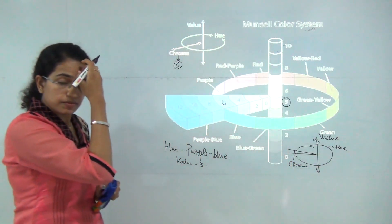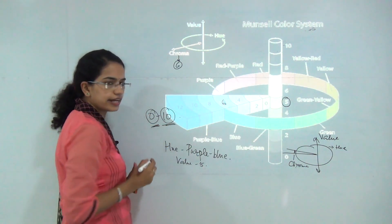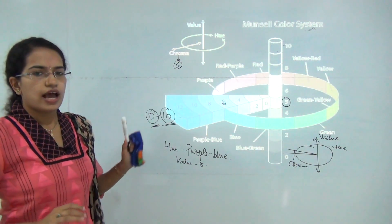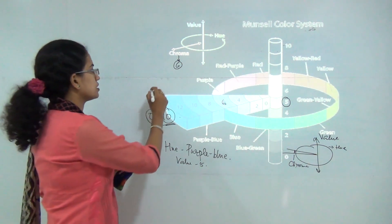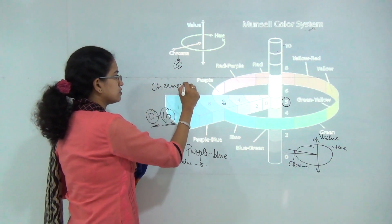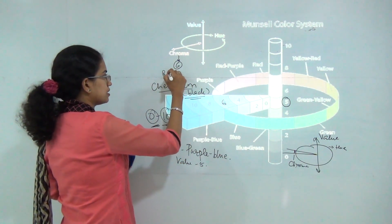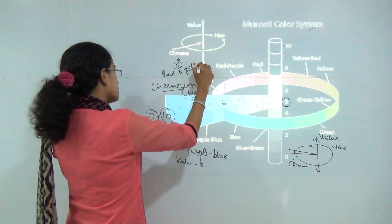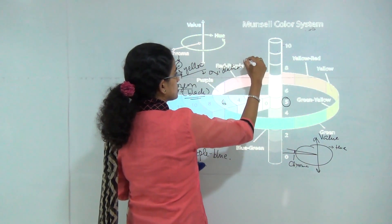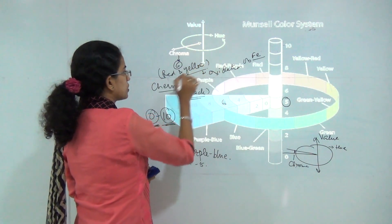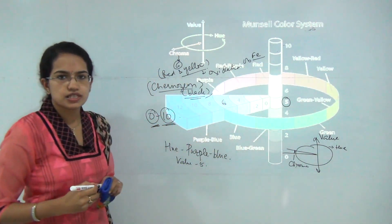Value is determined from 0 to 10: 0 is the highest darkness and 10 is the lightest form. Based on this system we determine the soil colour. There are various soil types — turnosum soil is black; red and yellow soils are formed due to oxidation of iron; and chernosum soil is also black. The colour of these soils can be determined by the Munsell colour system.